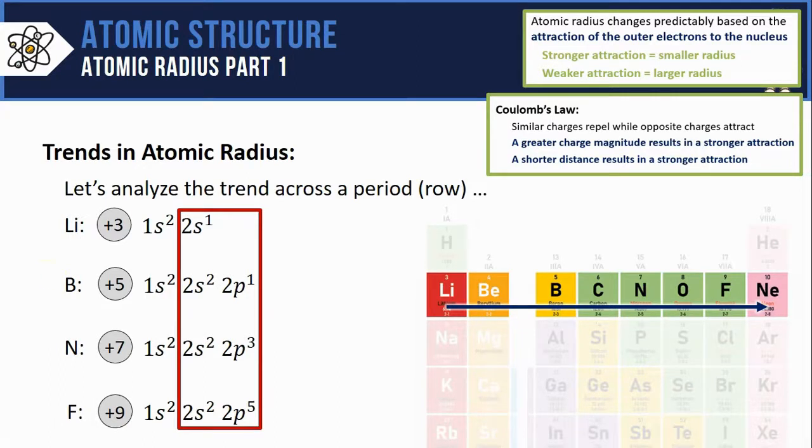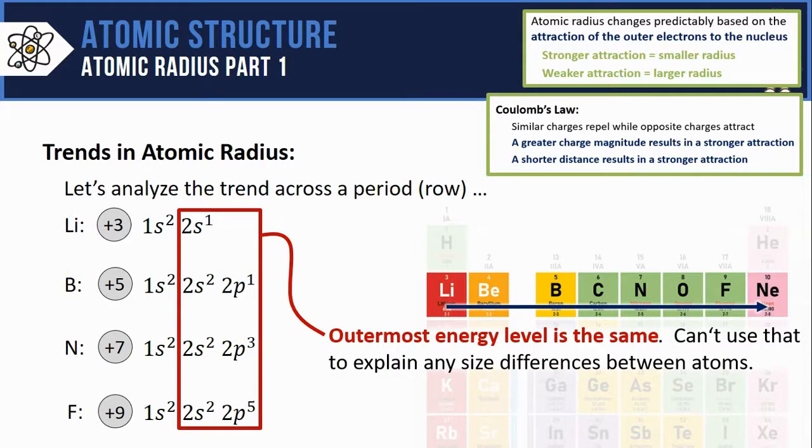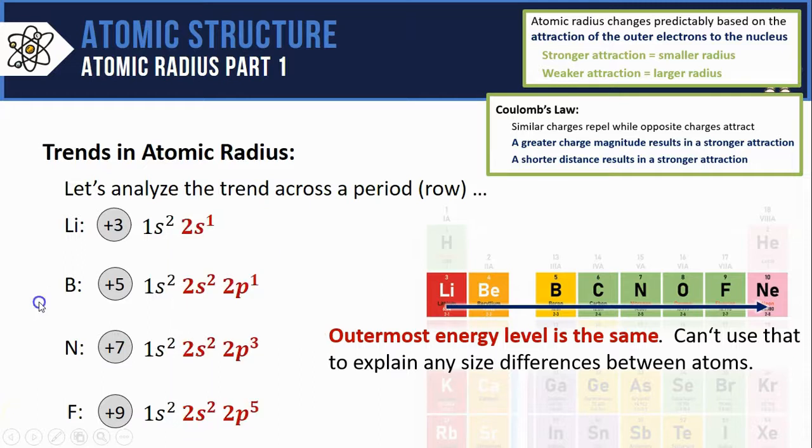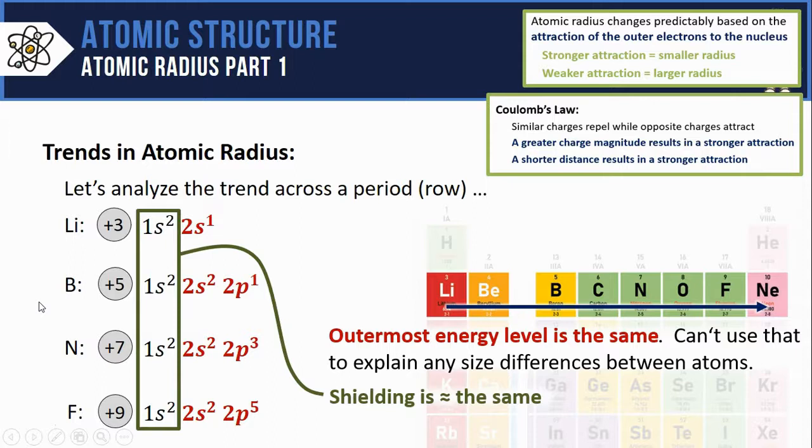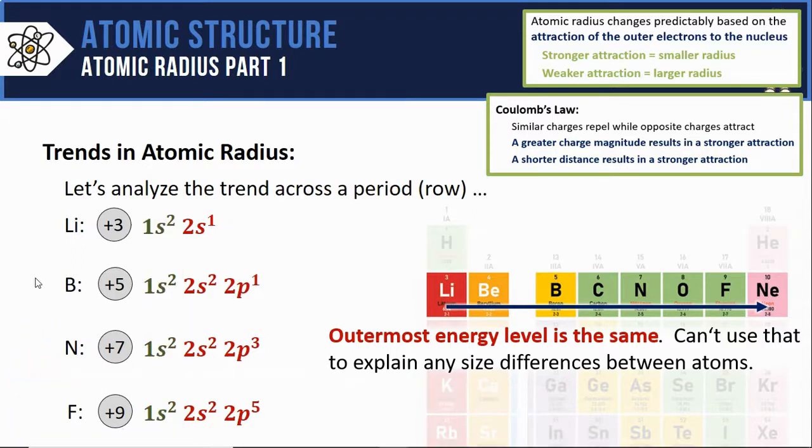The first has to do with those outermost valence electrons. They're all in exactly the same energy level. Because there's no differences in highest energy level for these atoms, we can't use that to explain any size differences. At the same time we can see that all of these atoms also have the same amount of core electrons, meaning the shielding is approximately the same across the row as well.